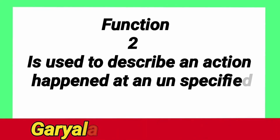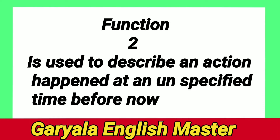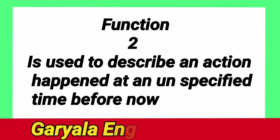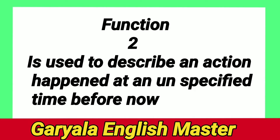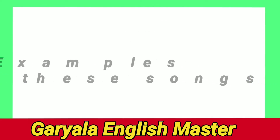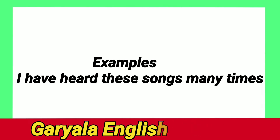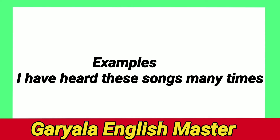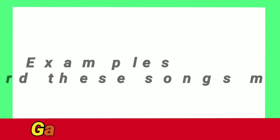Function number two: Present Perfect is used to describe an action that happened at an unspecified time before now. For example: 'I have heard these songs many times.' Try to understand this use with the help of the given examples.